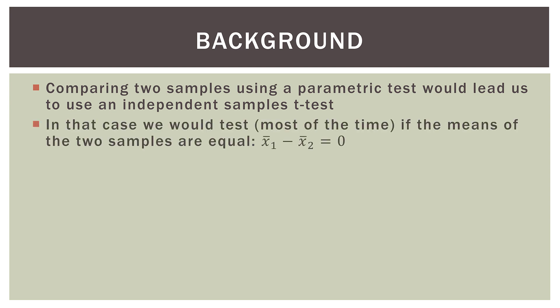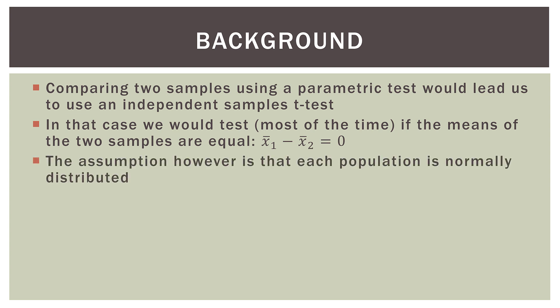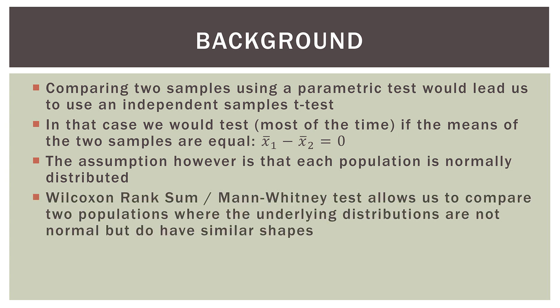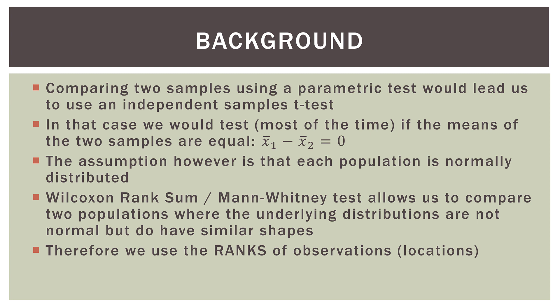In the independent samples t-test, we are comparing the location of two means from two samples, and those samples are assumed to have normal distributions. This is really the nonparametric version of that test. The Wilcoxon rank sum and Mann-Whitney test allows us to compare two populations where the underlying distributions are not normal, but do have similar shapes. To do that, we use the ranks of our observations within the sample — not the actual underlying values. That's why it's called the Wilcoxon rank sum test: we use the ranks.